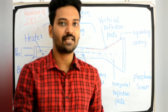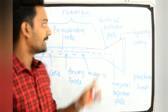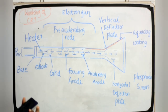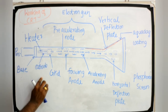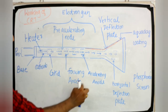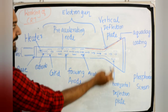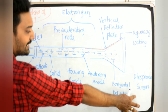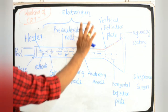We are going to discuss the working of CRT — Cathode Ray Tube. The important parts of CRT are: pins, base, heater, cathode, grid, pre-accelerating anode, focusing anode, accelerating anode, horizontal deflection plate, vertical deflection plate, aquadag coating, phosphorus screen, and electron gun.